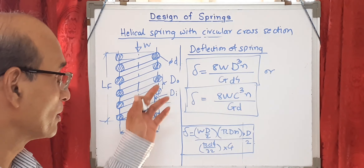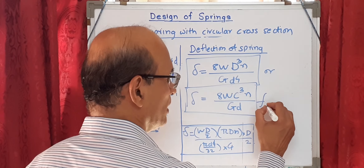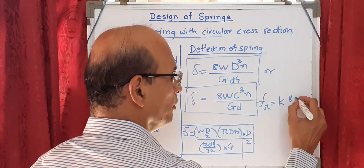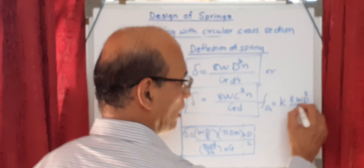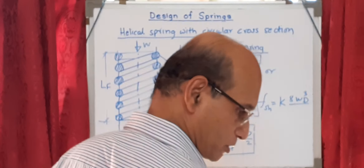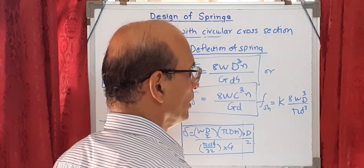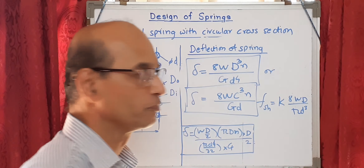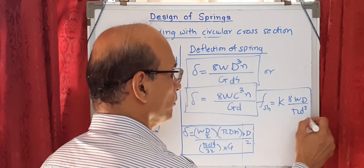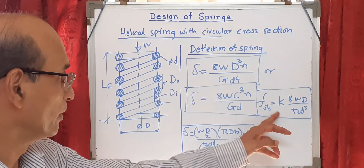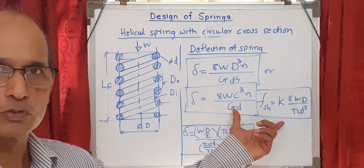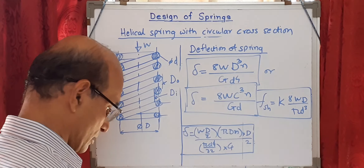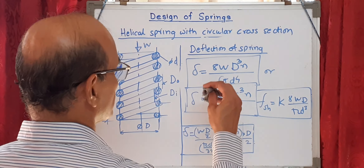When designing a spring, we use the earlier shear stress equation: shear stress equals Wahl's stress factor K times 8·W·D upon pi·d³. So with this stress equation and the deflection equation, we are in a position to design the spring. In addition to these, there are some other equations, so let me write all of them at one place.